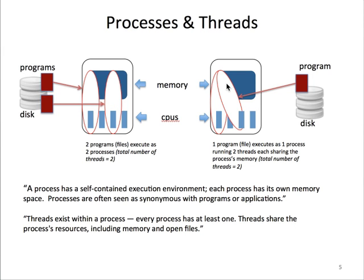On the right-hand side is demonstrated a multi-threaded process. Here a single program is read into memory as a single process, but this process is running two threads of execution on two CPUs. However, the important point is that both threads have access to the same memory space. Understanding this distinction is important when deciding how much memory to allocate for single versus multi-threaded programs. Know also that a program must be written to be multi-threaded — it doesn't happen automatically.